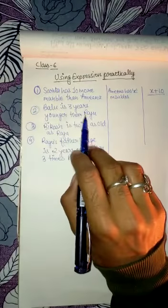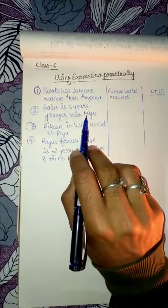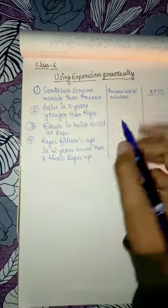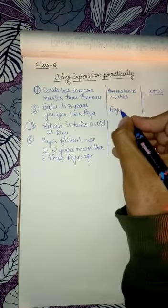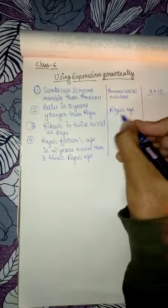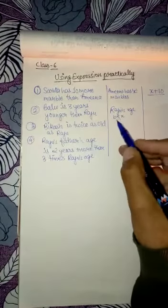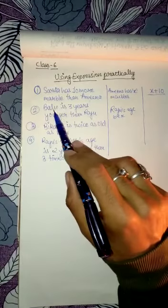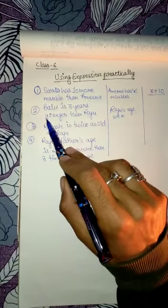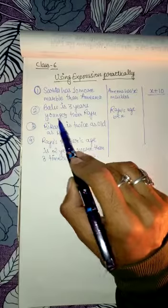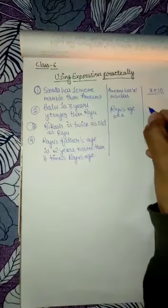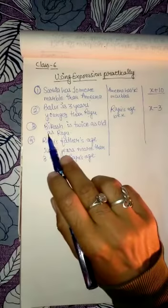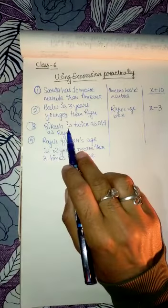Balu is compared to Raju, so first we take Raju's age as X. Balu is three years younger — 'younger' means he is three years less than Raju — so the expression will be X minus 3.